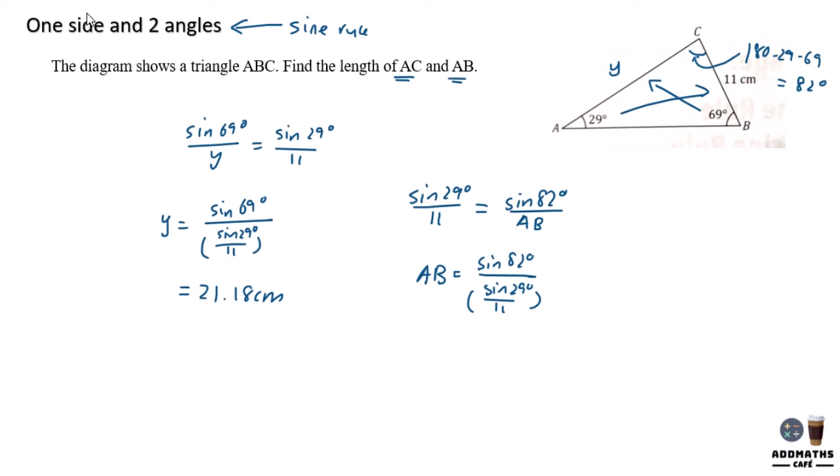So your AB is 22.47 cm. Always write in four significant figures.